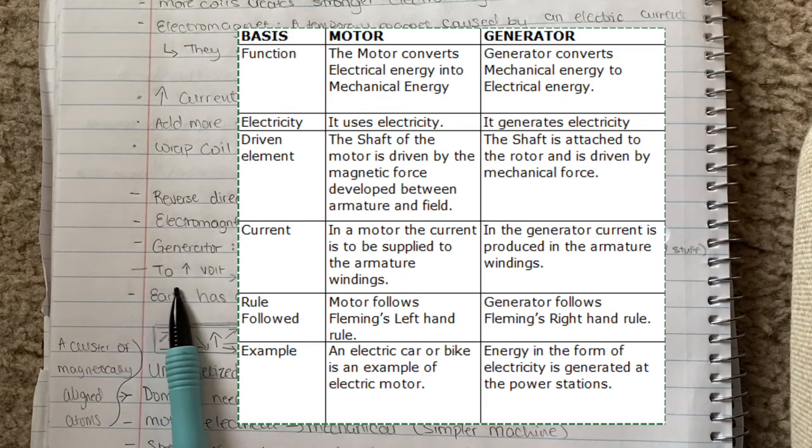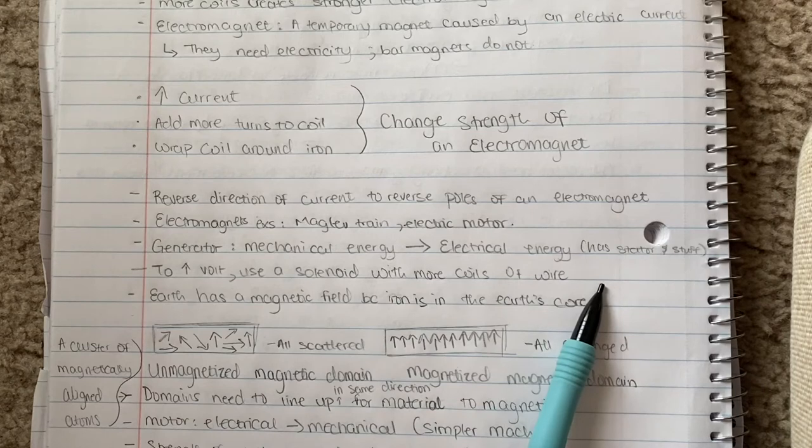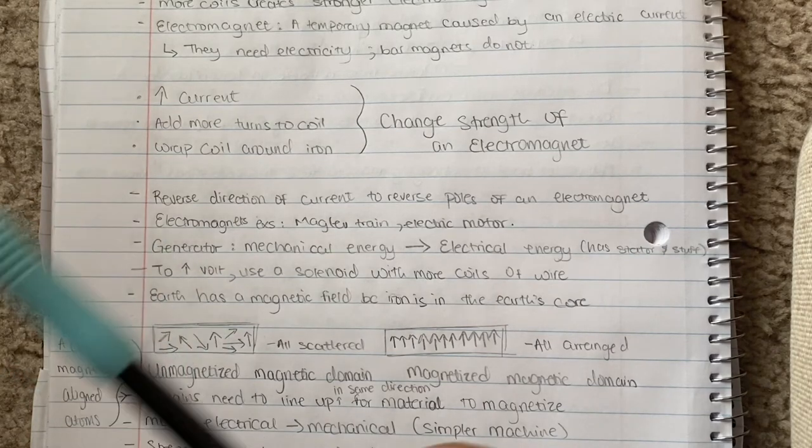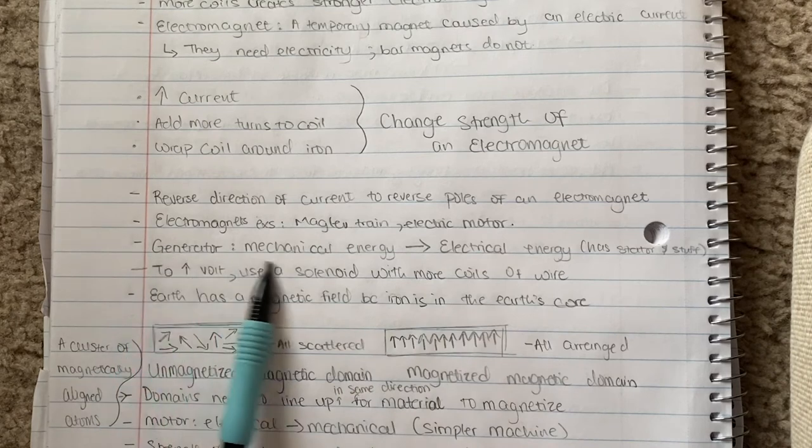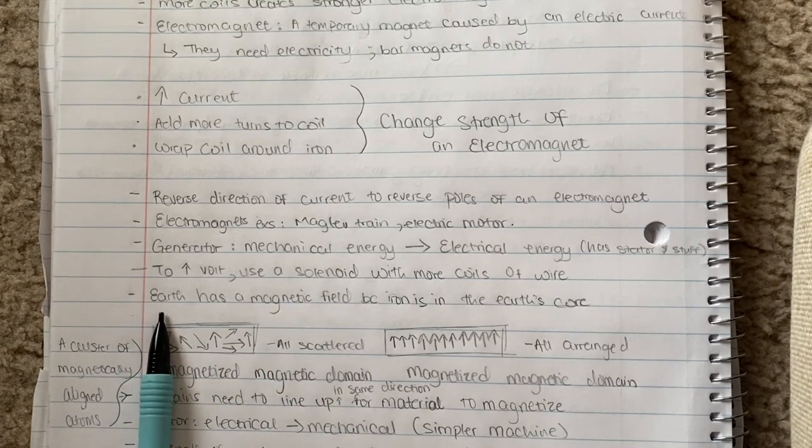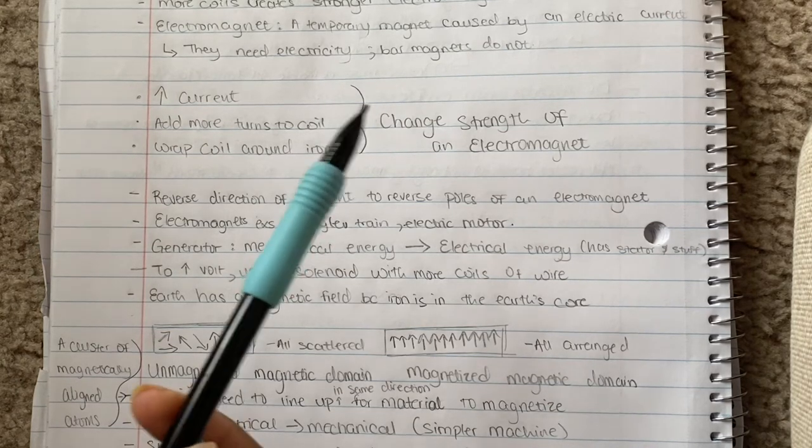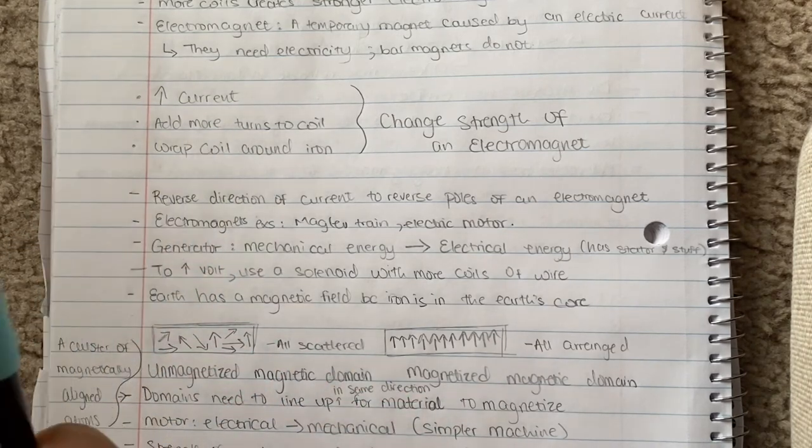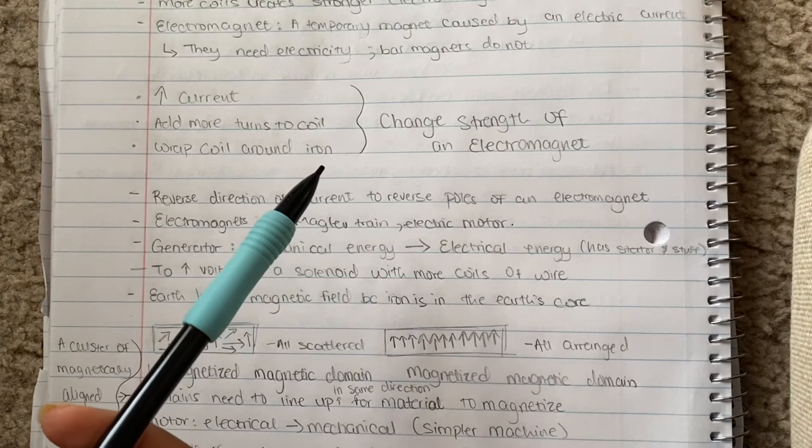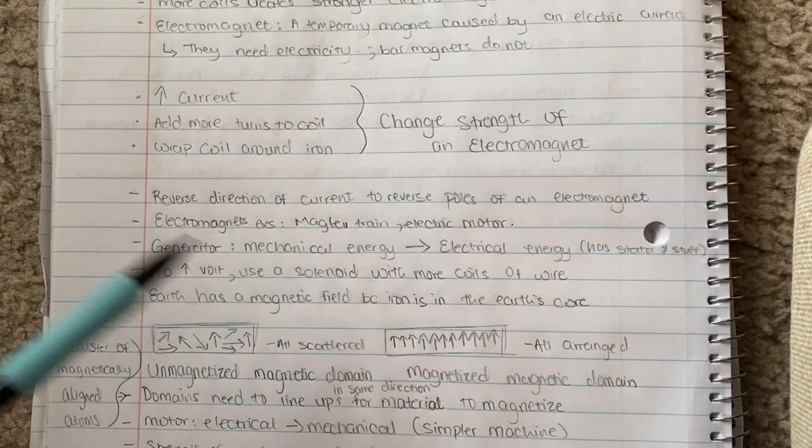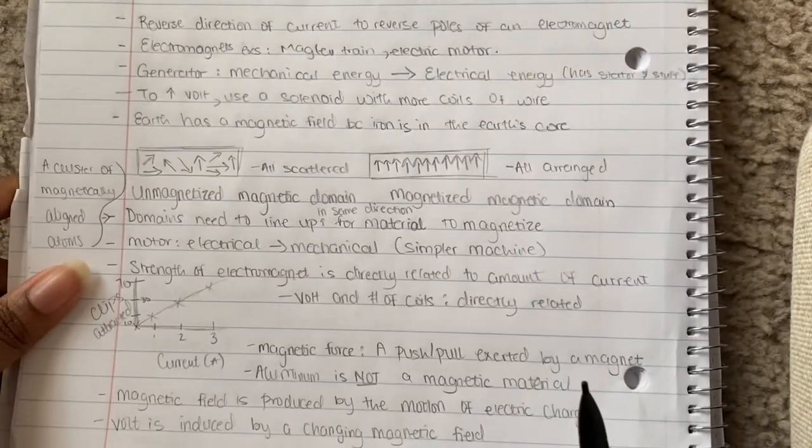To increase your voltage, you need to use a solenoid with more coils of wire. I feel like we're seeing a pattern where the more coils you put around your iron core or whatever, it always increases something else, so keep that in mind. The reason why Earth has a magnetic field is because iron is in the core of the Earth. If you think about it, to make an electromagnet which makes a temporary magnet, you need to wrap your wires around iron or something that can be magnetized.